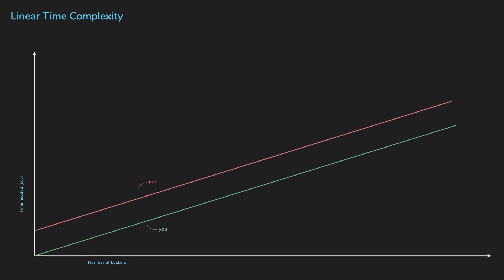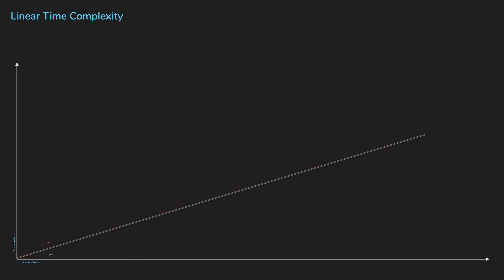When you compare an algorithm that is asymptotically more efficient than the other, then it's guaranteed to be faster eventually as you keep increasing the input size, no matter the constants or the coefficients.